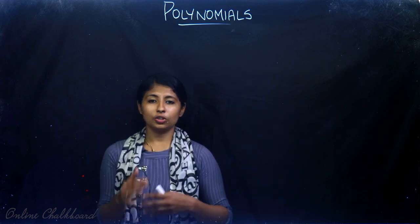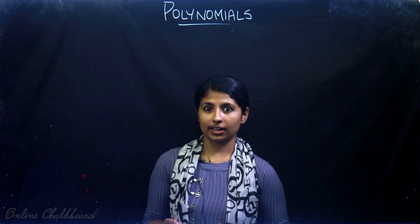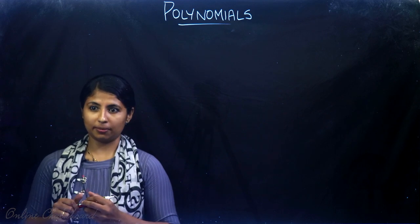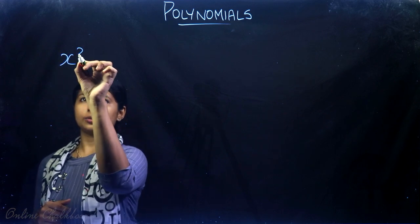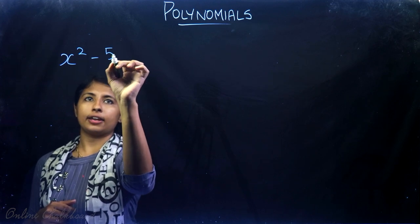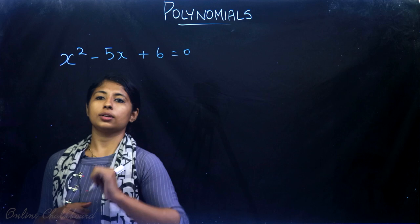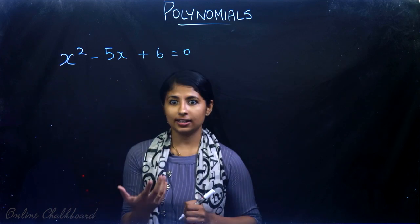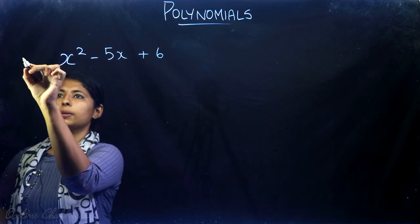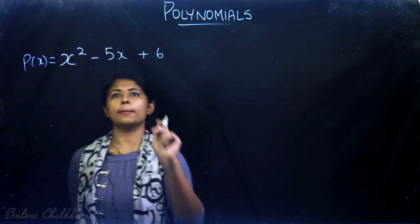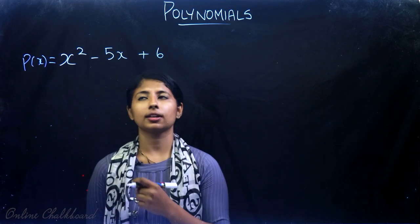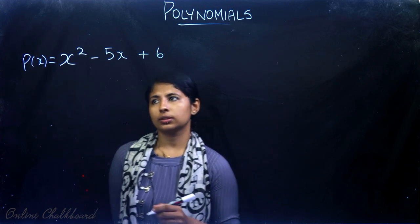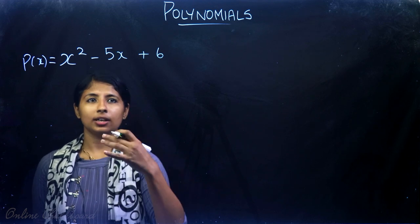In Class 9 you learned how to find the zero of a quadratic equation using the split-the-middle-term method. For example, x² - 5x + 6 = 0. Suppose this is a quadratic polynomial p(x) = x² - 5x + 6. We need to find the zero of the polynomial such that p(x) = 0, using the split-the-middle-term method.